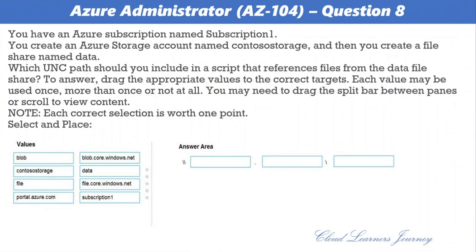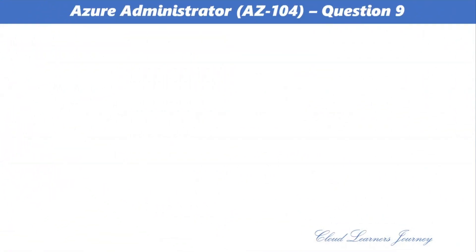Question number eight. You have an Azure subscription named Subscription One with a storage account named Contoso Storage and a file share named data. Which UNC path should you include in a script that references files from the data file share? The correct answer: the UNC path uses the storage account name, so it is \\contosostorage.file.core.windows.net\data — using the storage account name, file.core.windows.net as the endpoint, and data as the share name.